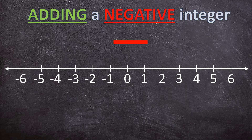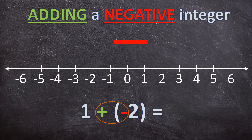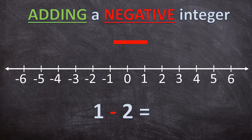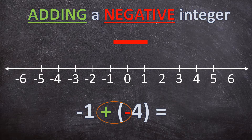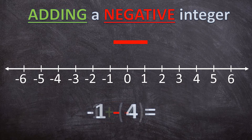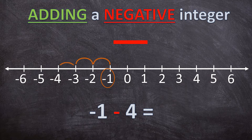Let's look at another example: 1 plus negative 2. Plus negative 2 simply means 1 minus 2, which is negative 1. And the last example of this rule — negative 1 plus negative 4 simply means negative 1 minus 4. Let's have a look at it on the number line: negative 1 minus 4 is negative 5.